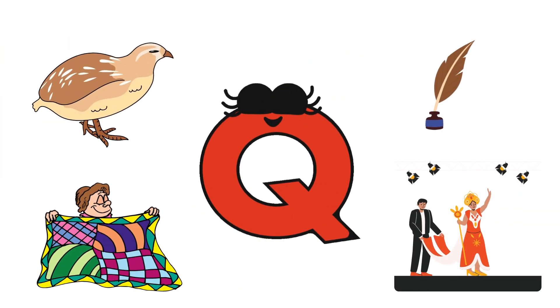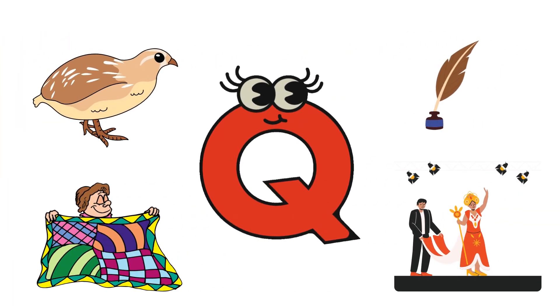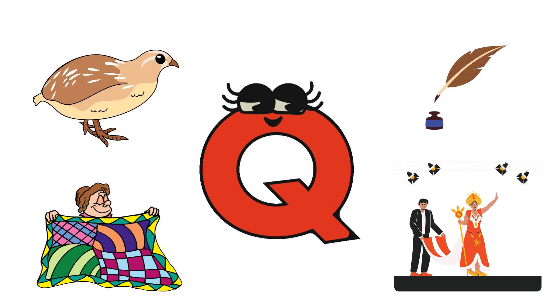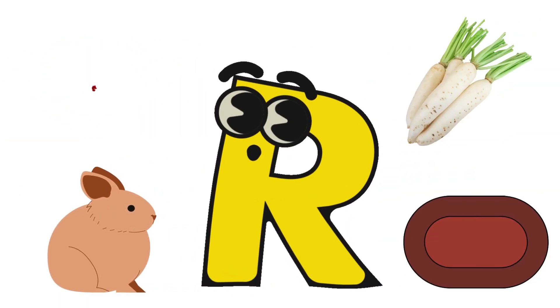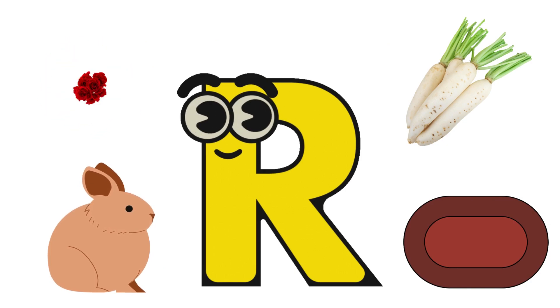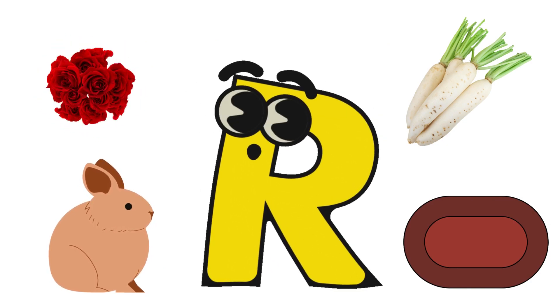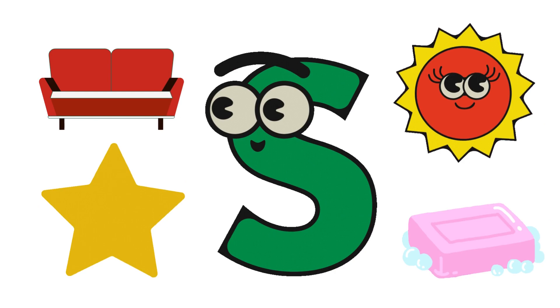Q for quail, quilt, quill. R for rose, rabbit, radish, rug.